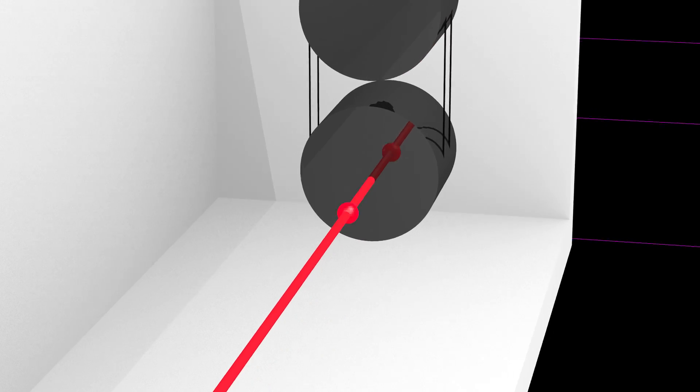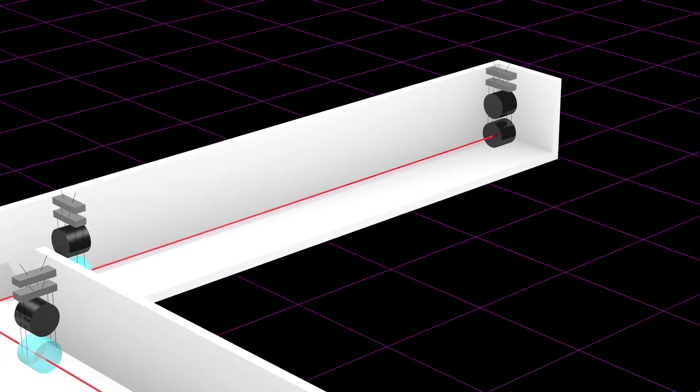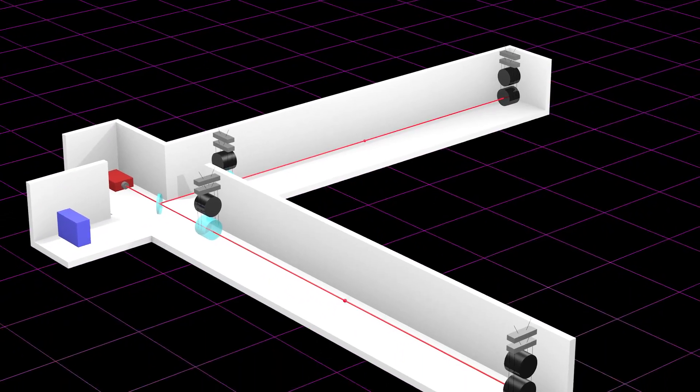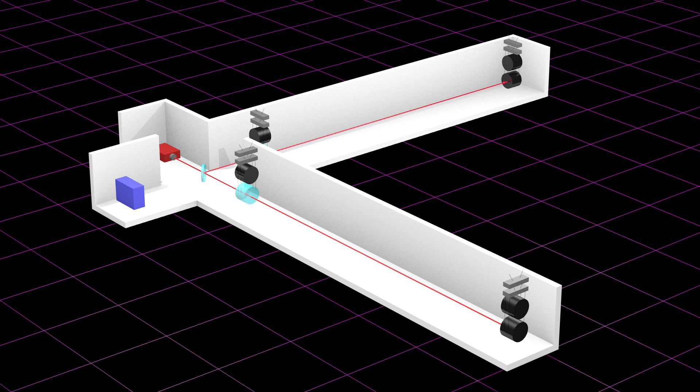When you're trying to detect distances with a sensitivity less than the nucleus of an atom getting rid of external noise is very important. Each arm bounces the laser back and forth 400 times to make the arm effectively 1,600 kilometers long. And each time around the laser is boosted to make it stronger.